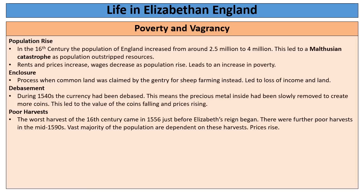Finally, there are poor harvests. The vast majority of the country were farmers who relied on good harvests to be able to eat — a series of bad harvests led to starvation, famine and disease. The worst harvest of the whole period came in 1556, just before Elizabeth's reign began, so its effects were still being felt when Elizabeth became Queen. And throughout her reign there were periodic bad harvests, particularly in the 1590s, leading to rising prices and increasing poverty.